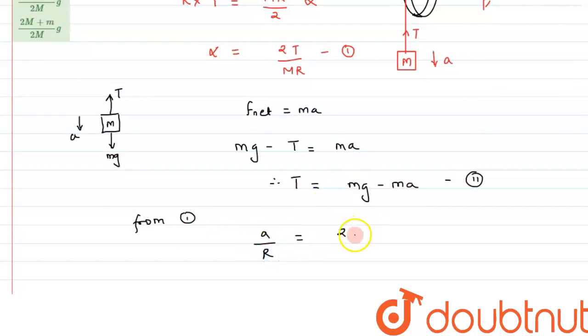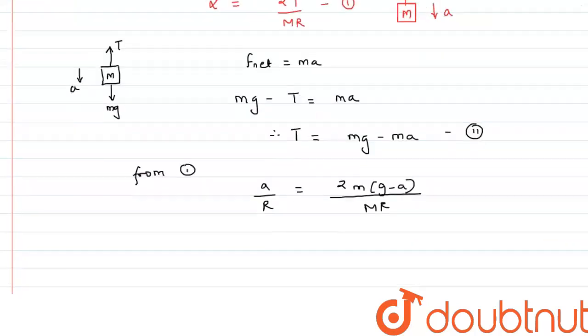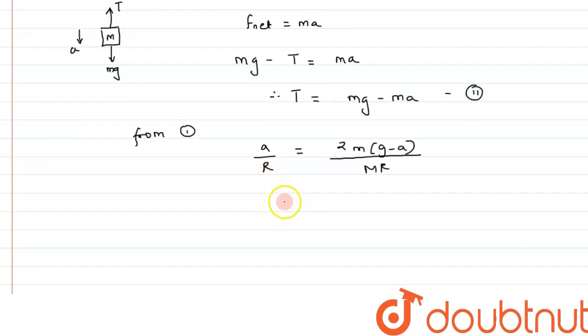M can be taken out as common: (g - a) divided by MR. R and R will cancel, so from here we can say a equals 2mg - 2ma.